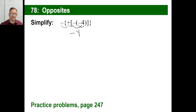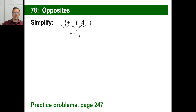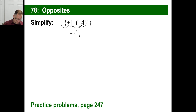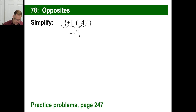Look on page 247 and try the practice problems. Pause it when you do A, then come on back. The answer to A is negative three. Pause it and try B. B has four of them, so it's going to be positive seven. Pause it and try C. That's going to be a positive. Pause it and try D. For D, don't worry about the plus signs — just count the negative or opposite signs. There are three opposite signs, so the answer will be negative.